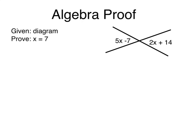Let's do an algebra proof. If you look at the given, we're pretty much given the diagram. We have two lines with intersection and two angles. We're trying to prove x equals 7.